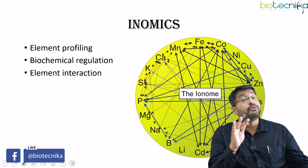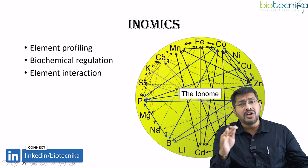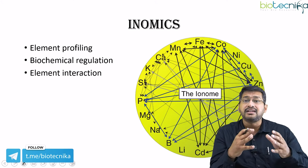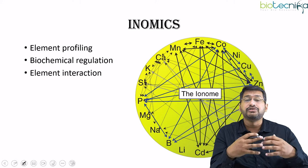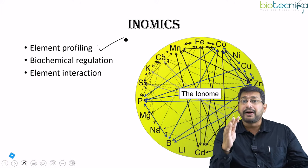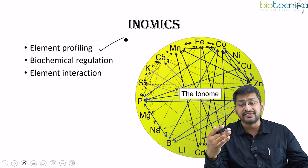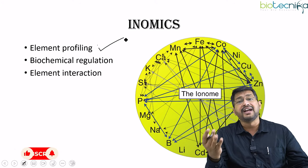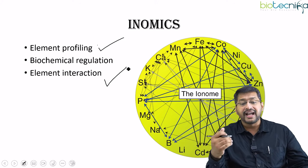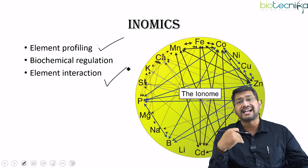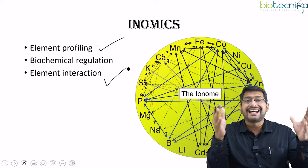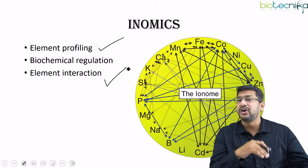The next and very interesting field is ionomics. Various metals and minerals play a crucial role in enzyme or protein activity. In ionomics, we study element profiling and the biochemical regulation involving ions — for example, iron and its regulation in hemoglobin synthesis, zinc fingers, and various elements interacting with larger biomacromolecules. This entire component comes under the umbrella called ionomics.